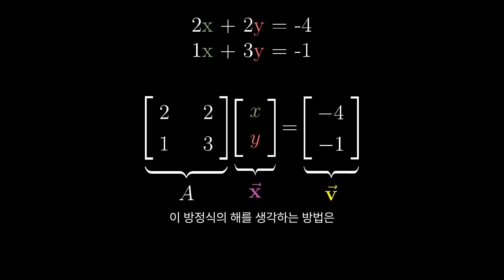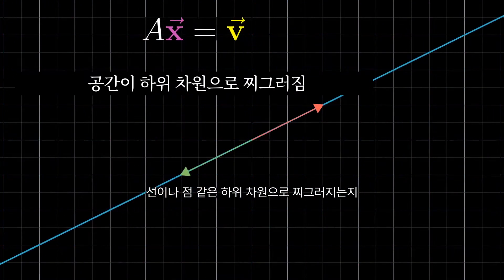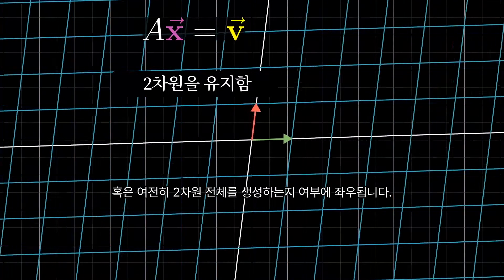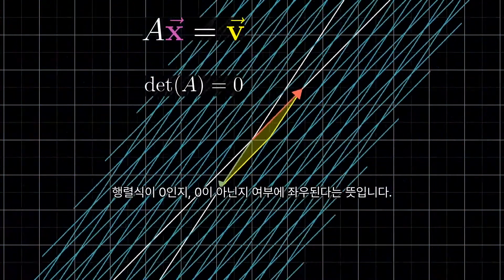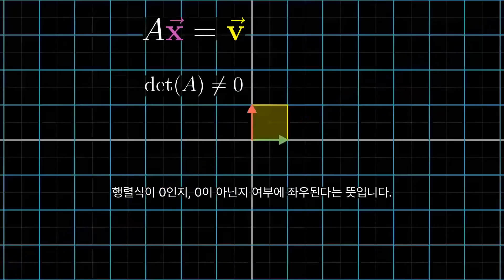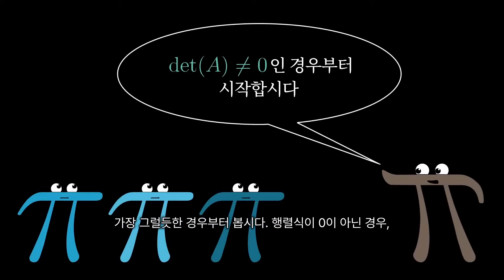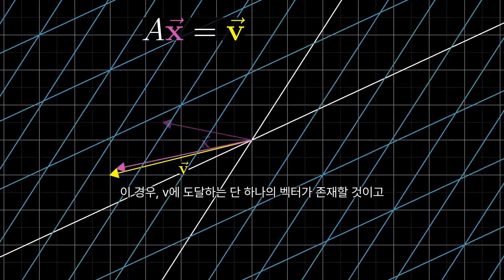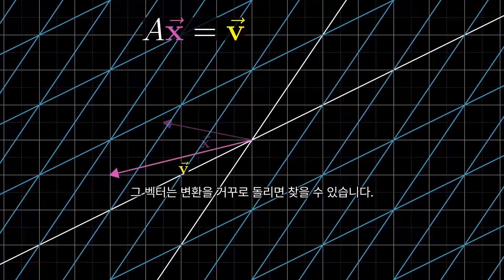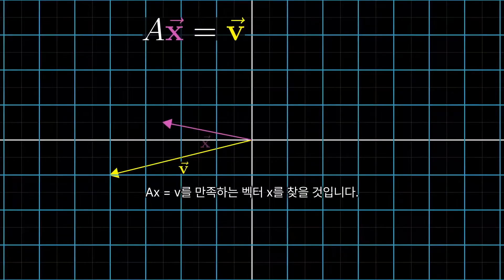How we think about the solutions to this equation depends on whether the transformation associated with A squishes all of space into a lower dimension — like a line or a point — or if it leaves everything spanning the full two dimensions where it started. In the language of the last video, we subdivide into the cases where A has zero determinant and the case where A has non-zero determinant. Let's start with the most likely case, where the determinant is non-zero, meaning space does not get squished into a zero area region. In this case, there will always be one and only one vector that lands on v, and you can find it by playing the transformation in reverse. Following where v goes as we rewind the tape, you'll find the vector x such that A times x equals v.